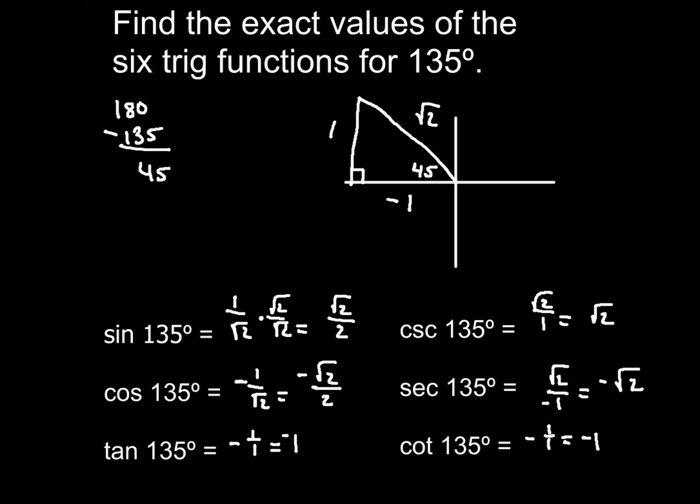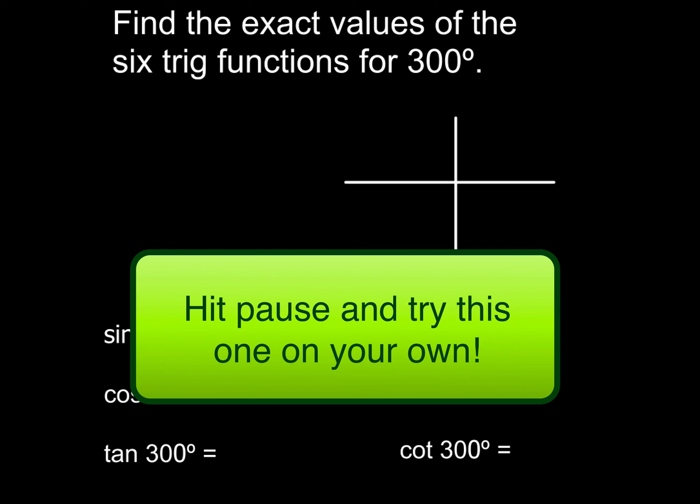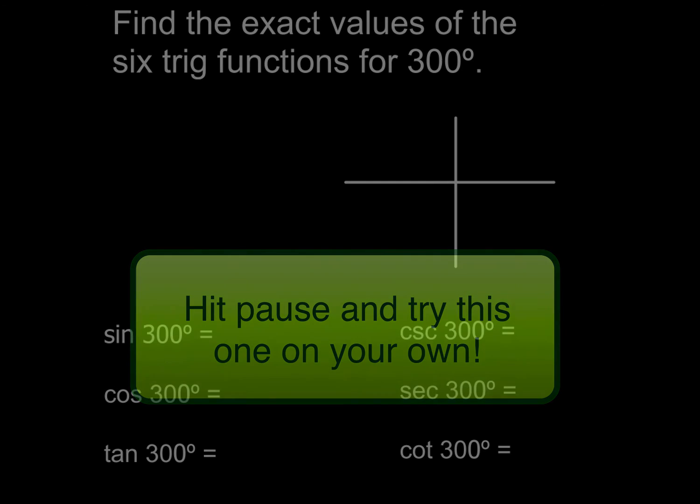But wait, we're not done. We've got one other problem to practice for you guys. So here we are with the last one. Find the exact trig values for the six trig functions for 300. So by now, I think you probably can rock this one out. So go ahead, find your reference angle, draw your reference triangle, fill in the values, and go ahead and find all of the things you need to here for this problem. When you're done, come on back and double check to make sure that you got this completely correct.